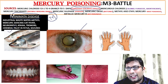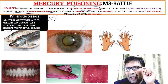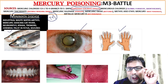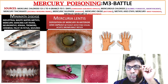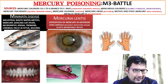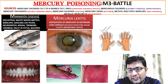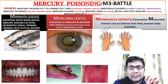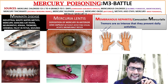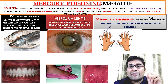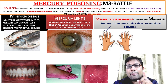The second M is mercuria lentis — there is deposition of mercury in the anterior lens capsule, known as mercuria lentis. Remember there is also an important reflex known as the Brown-Walt reflex. The extreme degree of tremor is known as concussion mercurialis — tremors so intense they prevent daily activities. One more M is membranous nephritis. So the three Ms are: Minamata disease, mercuria lentis, membranous nephritis, and concussion mercurialis.